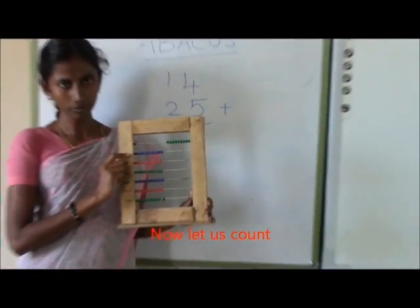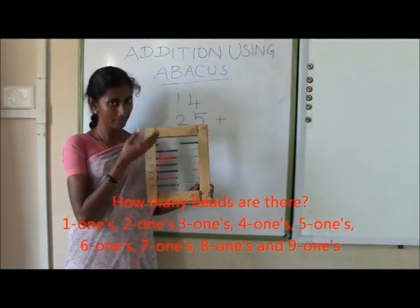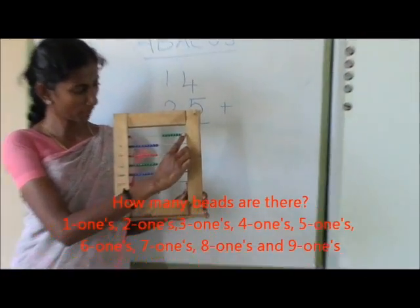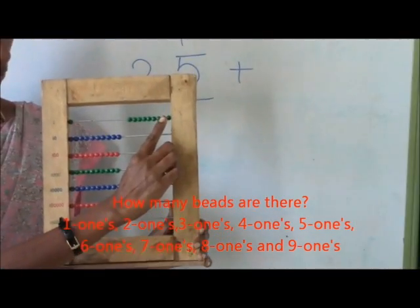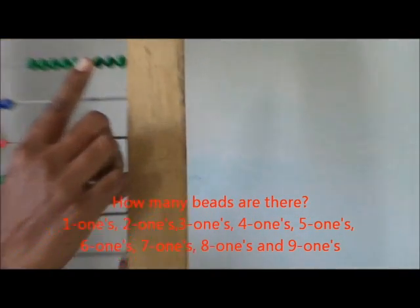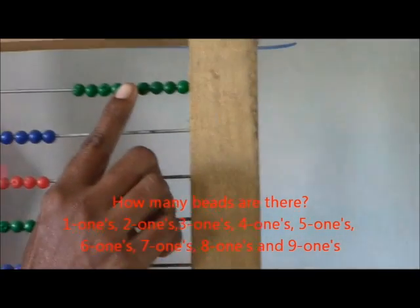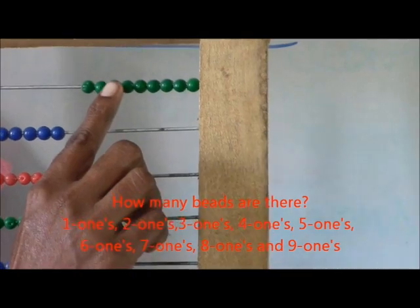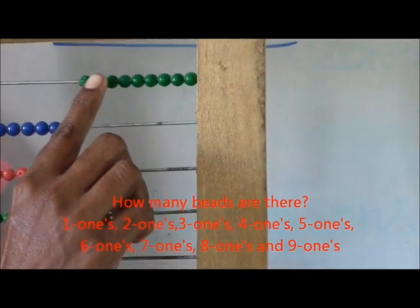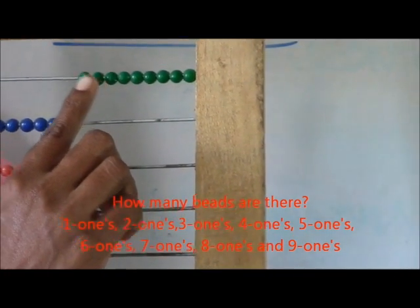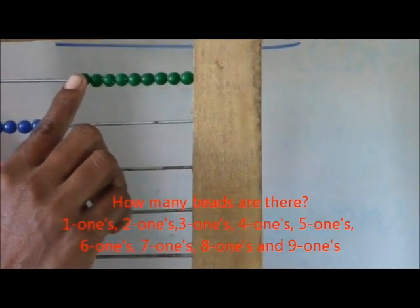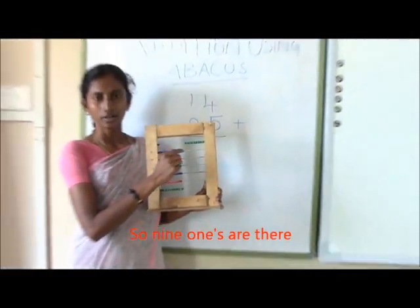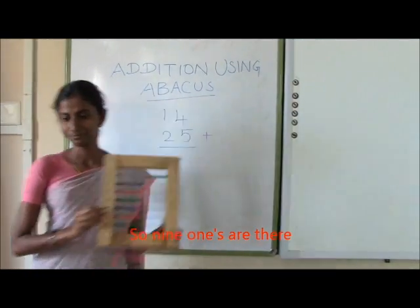Now let us count how many bits are there: 1, 2, 3, 4, 5, 6, 7, 8, and 9. So 9 ones are there.